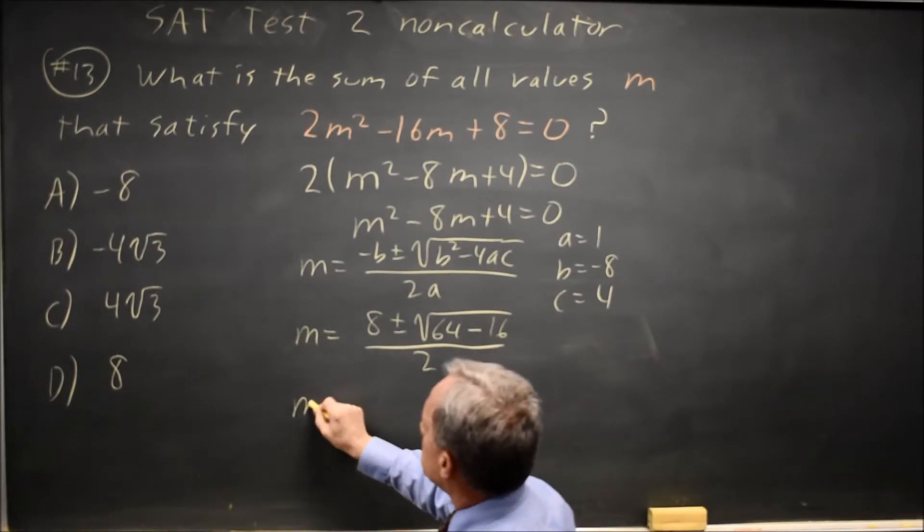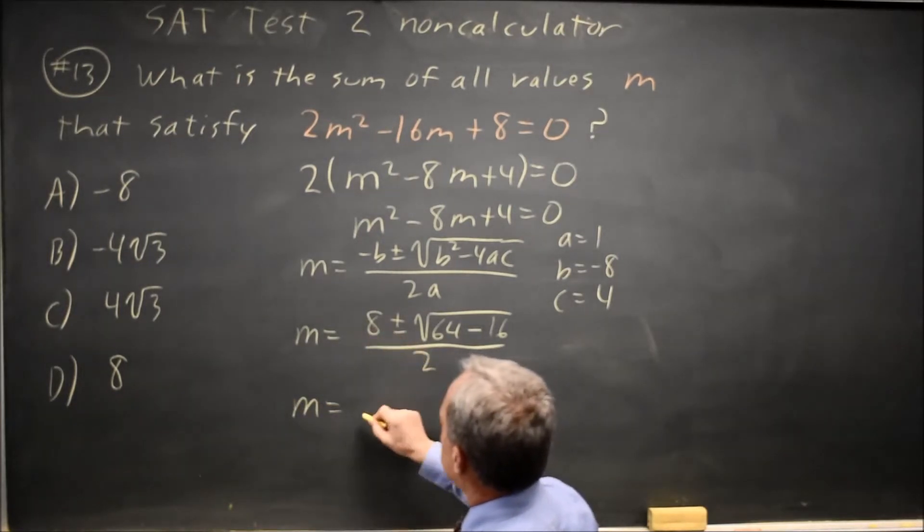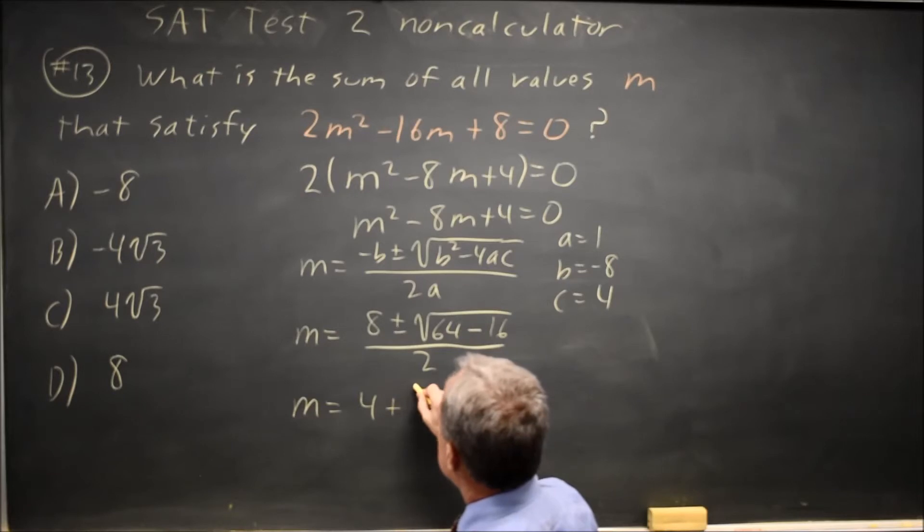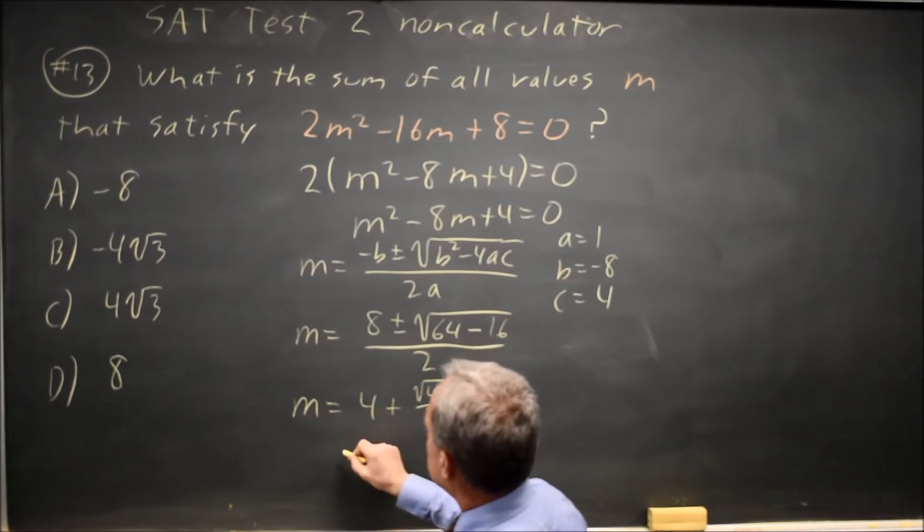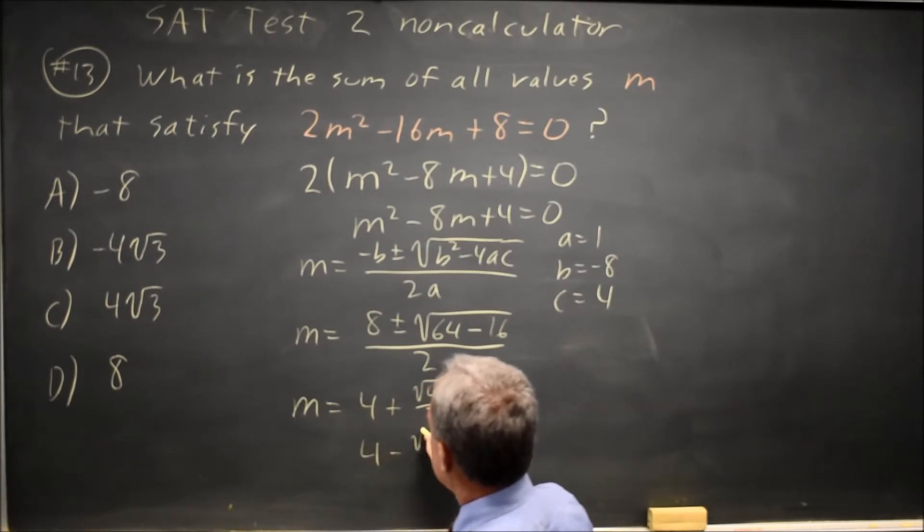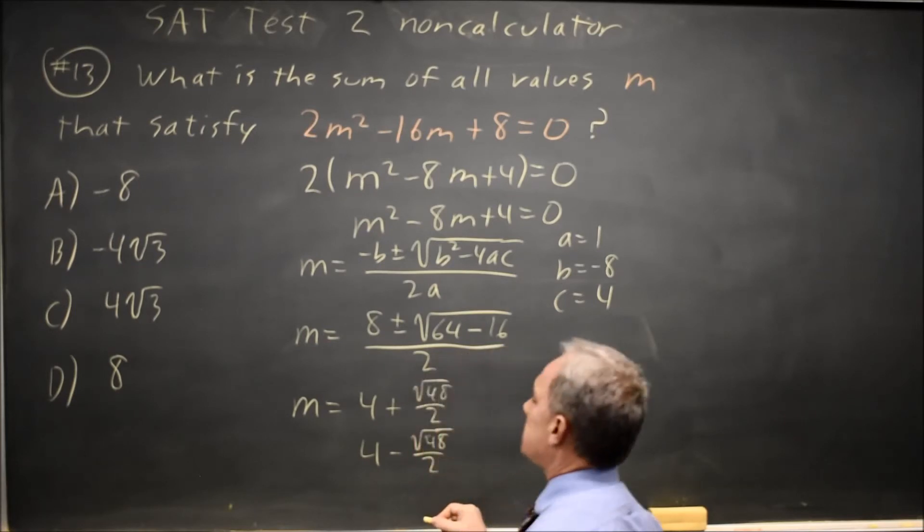So my solutions are m equals 8 over 2 is 4, plus the square root of 48 over 2, and then the other solution is 4 minus the same square root of 48 over 2.